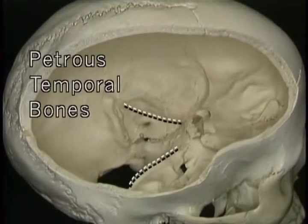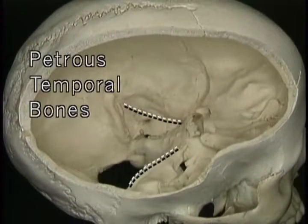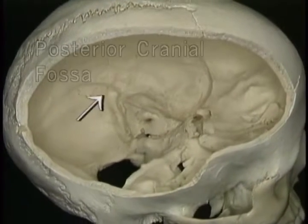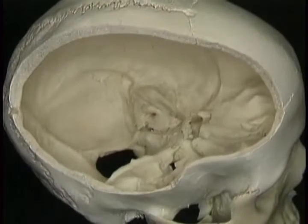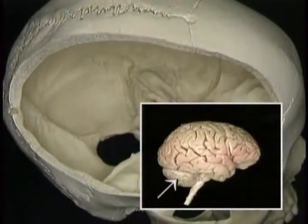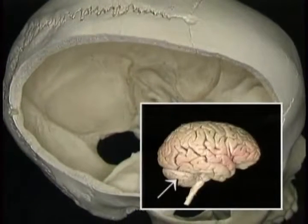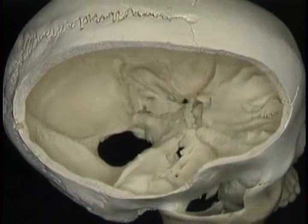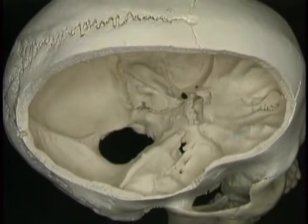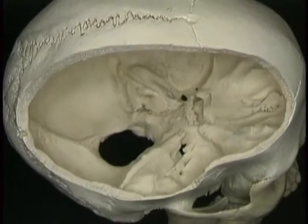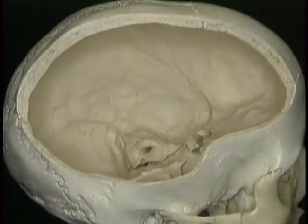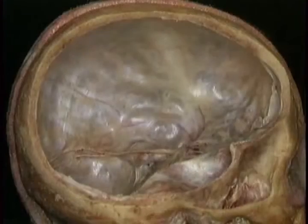The petrous temporal bones separate the middle cranial fossa from the posterior cranial fossa. The posterior cranial fossa contains the cerebellum and the brainstem. Here's the foramen magnum.